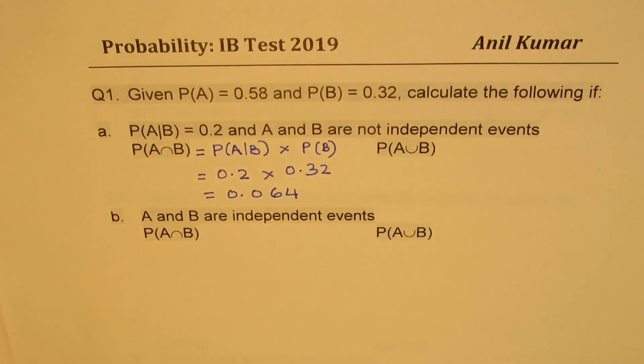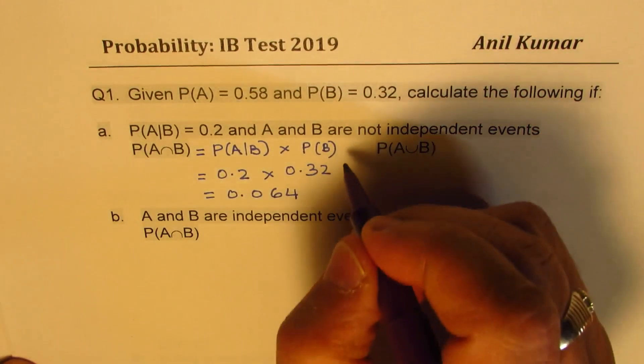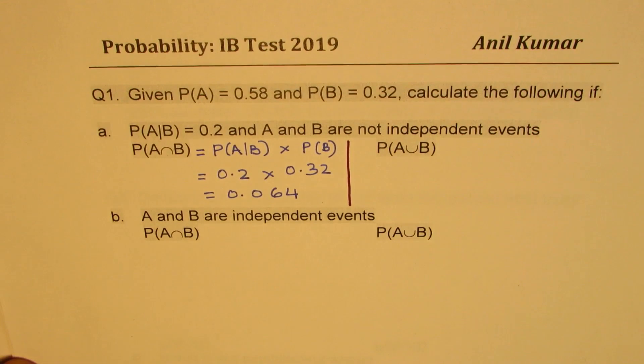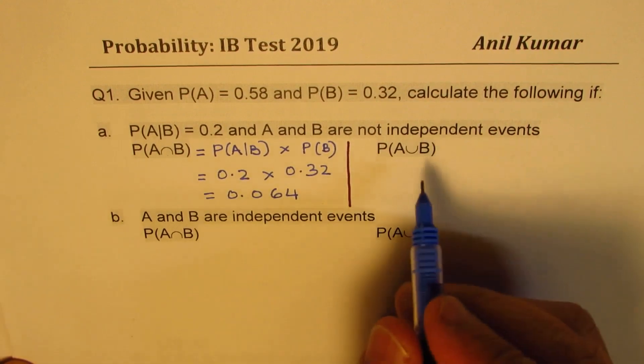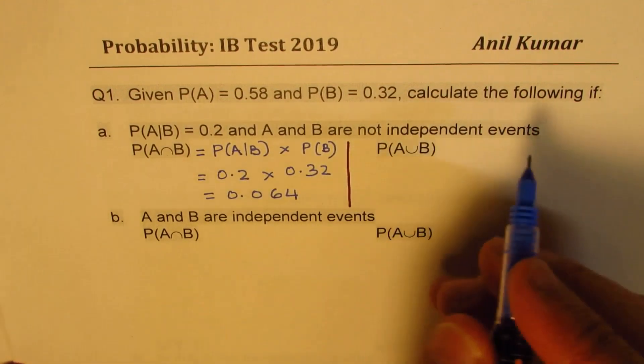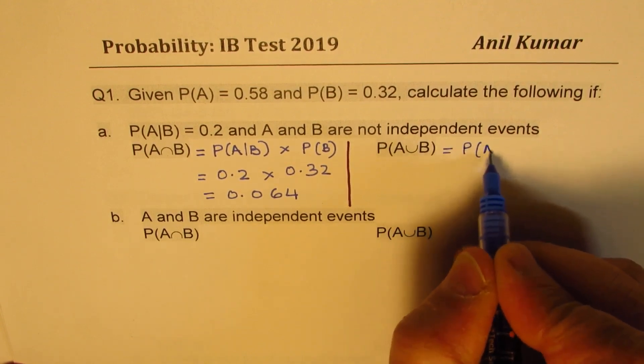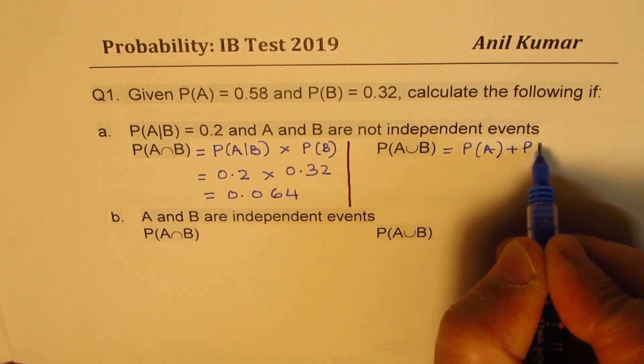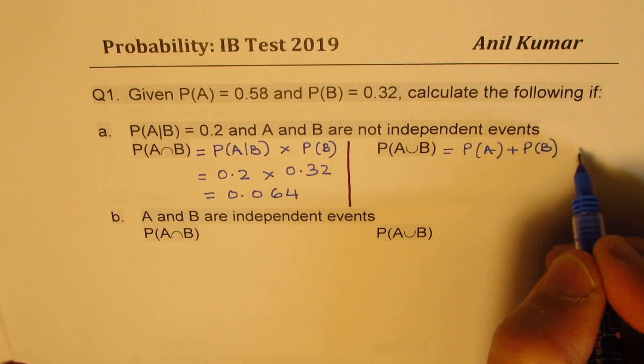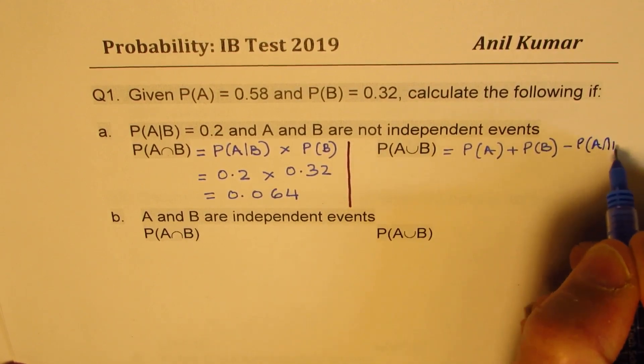Now for the union, we have to find A or B. Now there is something common in between them, which is the intersection. So this probability has to be equal to probability of A plus probability of B take away probability of A intersection B.